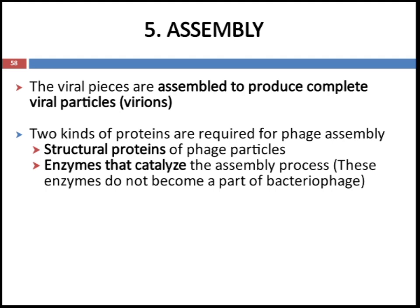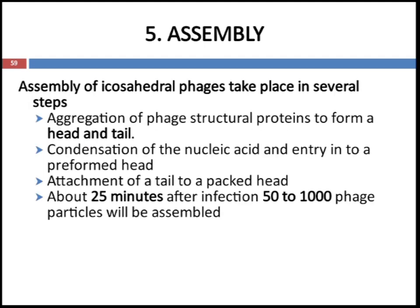The next stage of the lytic cycle is assembly. In this stage the virus species are assembled to produce complete viral particles or virions. Two kinds of proteins are required: structural proteins of phage particles, and enzymes that catalyze the assembly process. These enzymes do not become part of the bacteriophage during release. Assembly of icosahedral phage takes place in several steps: first the aggregation of phage structural protein to form head and tail, then condensation of nucleic acid and entry into the preformed head, followed by attachment of the tail. About 25 minutes after infection, approximately 50 to 100 phage particles will be assembled.